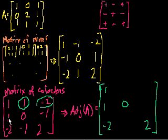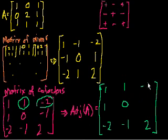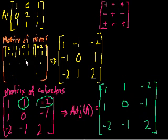So this number gets flipped to that position. The element in row 2, column 1 goes to column 2, row 1. The element here gets flipped down across the diagonal — that's negative 1. This one gets flipped all the way up there, so it's negative 2. And then this will be flipped there, giving negative 1. We are almost done — this is the adjugate of matrix A.